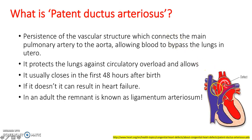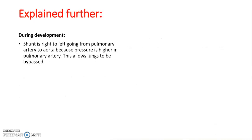Here's an example. Here we can see the aorta and the pulmonary arteries, and here is the patent ductus arteriosus, allowing blood from the aorta into the pulmonary arteries. During development, blood is shunted right to left, going from the pulmonary artery to the aorta, because pressure is higher in the pulmonary artery. This allows the lungs to be bypassed.